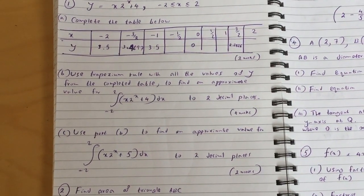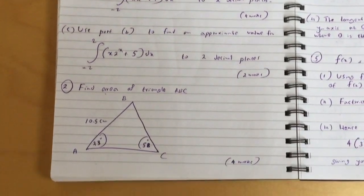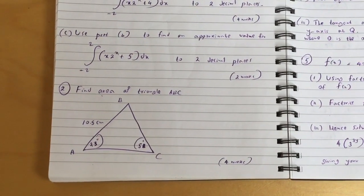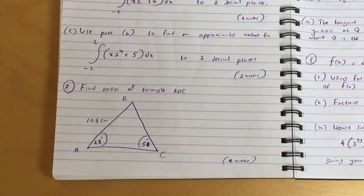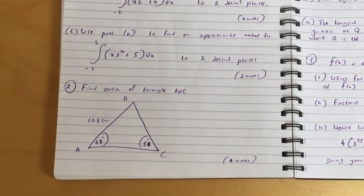Question two: find area of triangle ABC where AB is 10.5, angle BAC is 23 degrees, and angle ACB is 58 degrees.